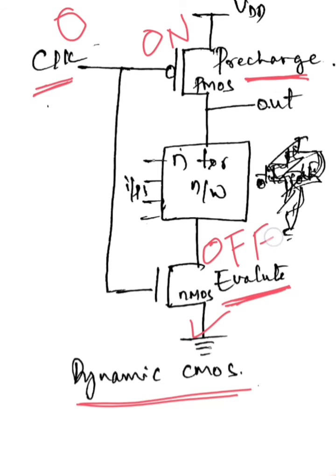Even if we provide different kinds of inputs, there is no direct path from output to ground because the evaluate transistor is in OFF state. There will be an open circuit between the ground terminal and the output, and this precharge PMOS transistor is ON.